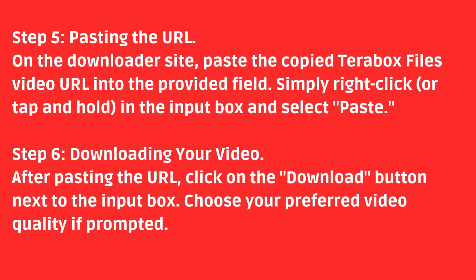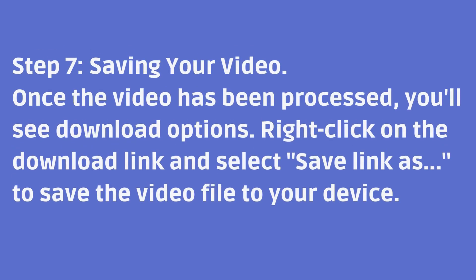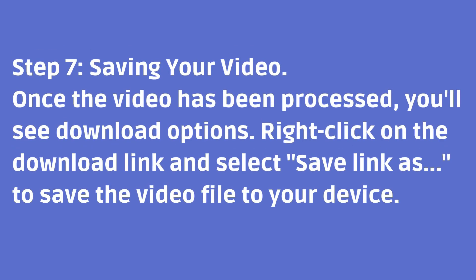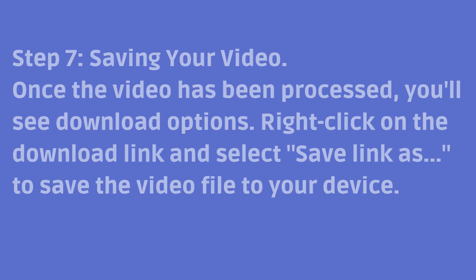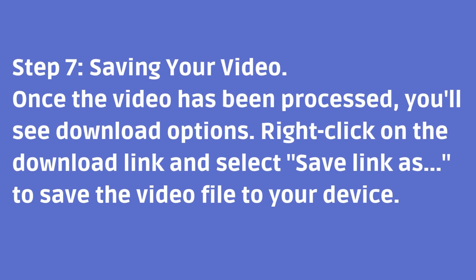Step 6: Downloading your video. After pasting the URL, click on the download button next to the input box. Choose your preferred video quality if prompted. Step 7: Saving your video. Once the video has been processed, you'll see download options. Right-click on the download link and select 'Save Link As' to save the video file to your device.